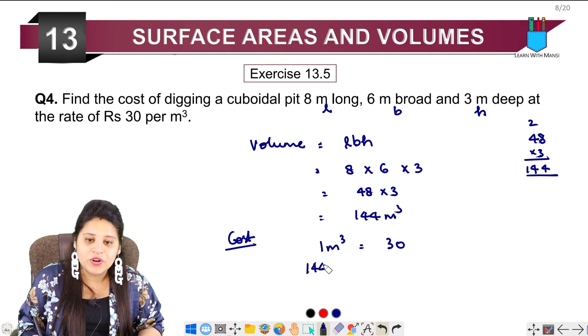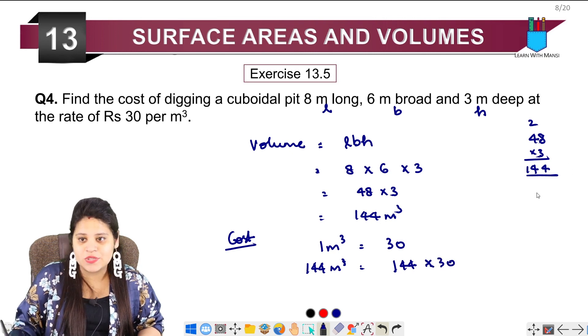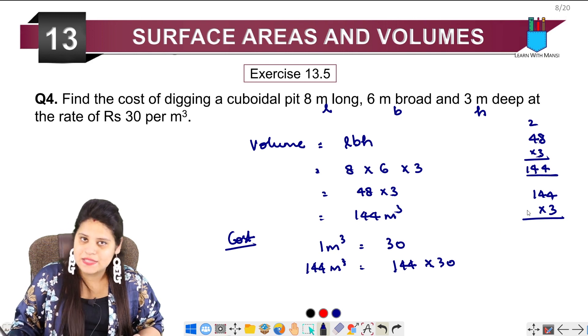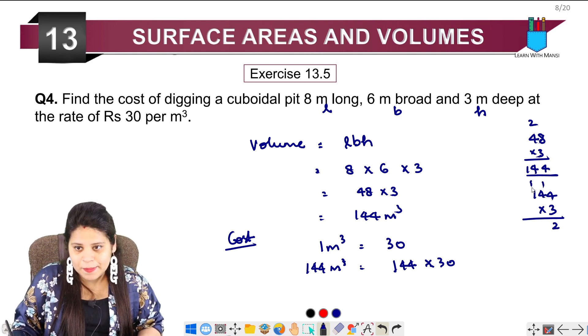So that will be 144 into 30. We multiply and add 0. 4 times 3 is 12, again 4 times 3 is 12 plus 1 is 13. 3 times 1 is 3 plus 1 is 4.